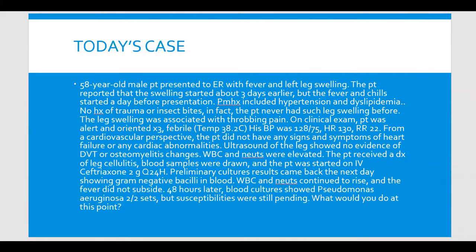48 hours later, blood cultures showed Pseudomonas aeruginosa — two out of two sets — so both blood samples grew pseudomonas. However, susceptibilities were still pending. We now know there's a pseudomonas growing in the blood, but we don't know which antibiotics will kill it. What would you do at this point? I ask you and my students to pause the video here and try to answer this question.